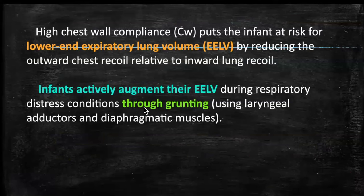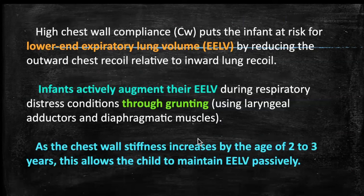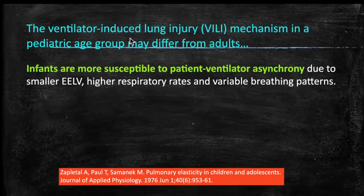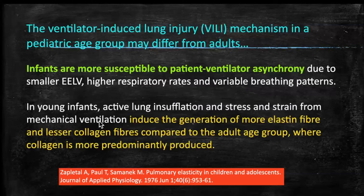Because of higher chest wall elastance, the chest wall tends to fall back over the lungs during every expiration. Infants actively augment end-expiratory lung volume during respiratory distress through laryngeal adductors and diaphragmatic muscles. As chest wall stiffness increases by age two to three years, children can maintain end-expiratory lung volume passively. Ventilator-induced lung injury mechanisms in pediatric patients differ from adults: infants are more prone to patient-ventilator asynchrony because of smaller EELV, higher respiratory rates, and variable breathing patterns.